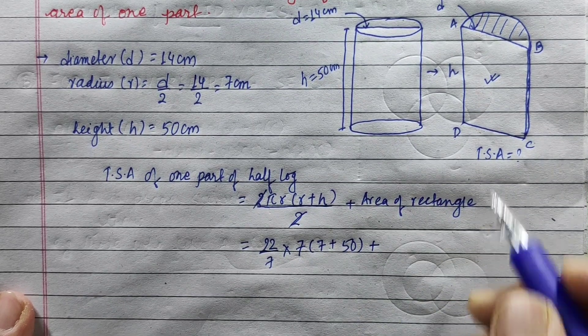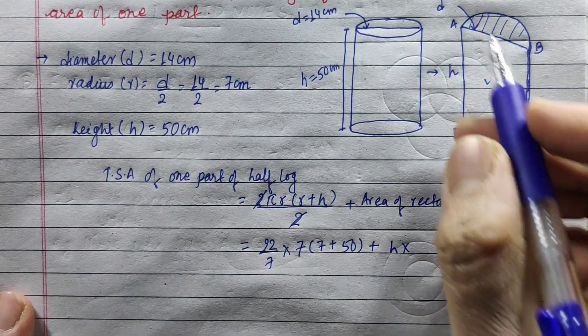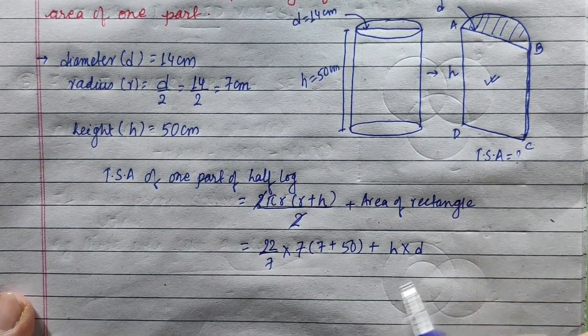Now, the area of rectangle: this length is height, this length is diameter. This is 7.